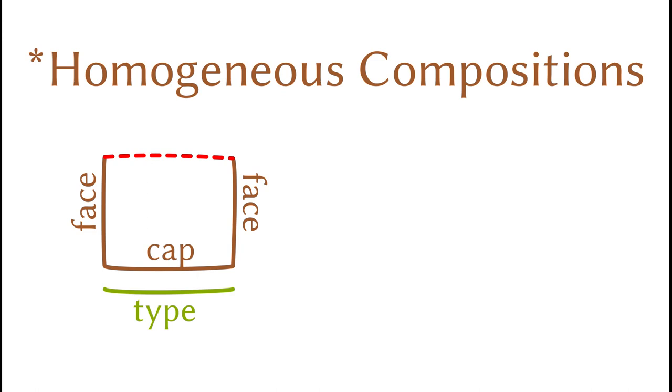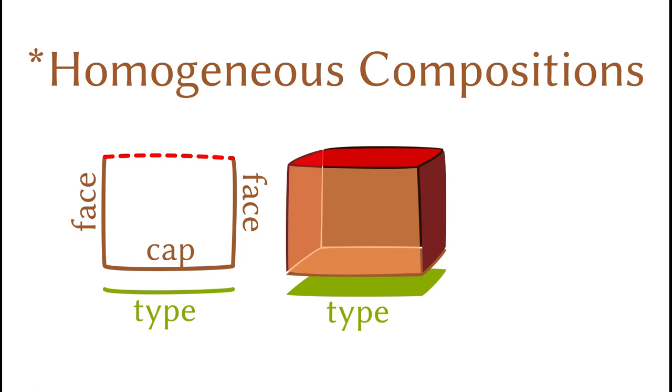For example, if you have a square missing the top edge, the operator can give you the top from the remaining three. The operator works for any dimensions. For the three-dimensional case, the top face in red is given by the composition from the remaining five faces of the box. The composition is homogeneous because the type is not changing from the bottom to the top. It is homogeneous along the vertical dimension.